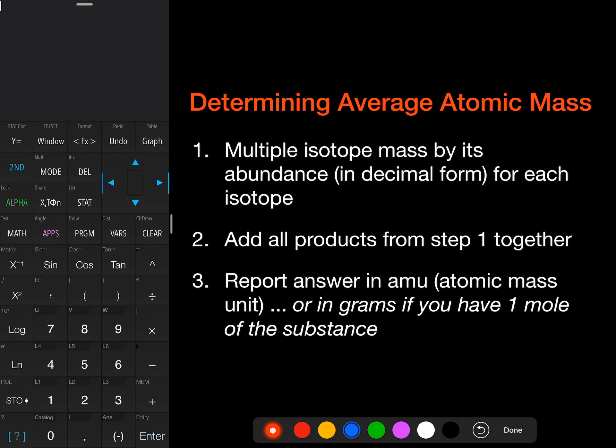So how do we determine the average atomic mass? What we do is take the isotope mass and multiply it by its abundance in nature to figure out the mass for each individual isotope. Then we take all of those different isotope masses times their abundance and add them together. We report our answer in AMU, and remember we can use that also as our molar mass.